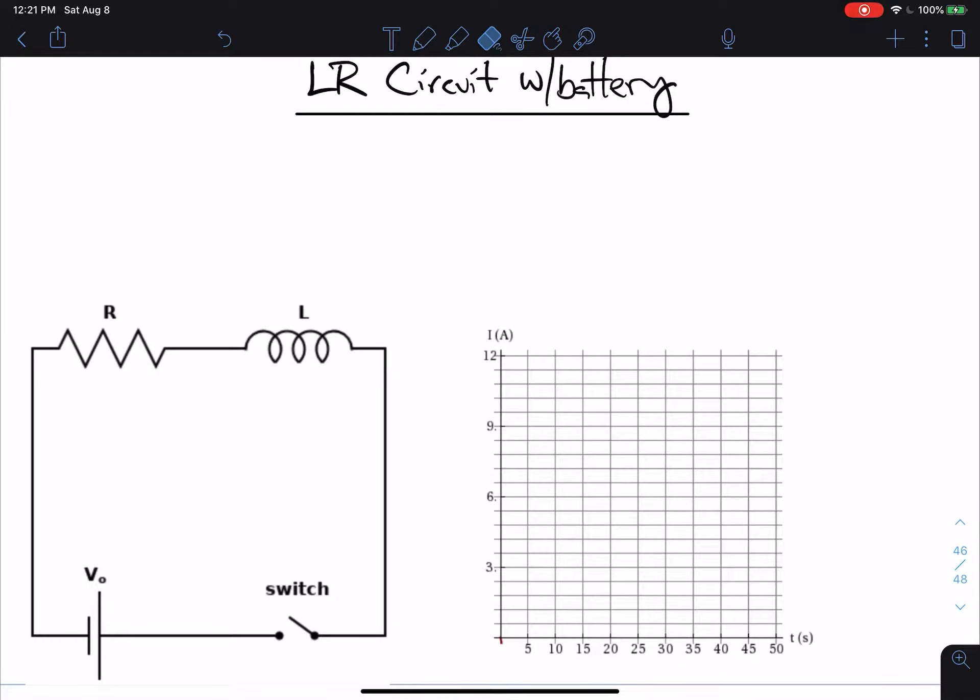The LR circuit with the battery is a pretty straightforward circuit to set up. You've got your resistor, that's the jagged line over here, connected in series with the inductor. You can see we've got the loops here, that's the symbol for the inductor. These two are connected in series with the battery, which is down here. And in this case, I also have a switch.